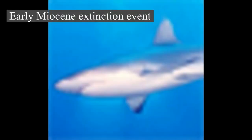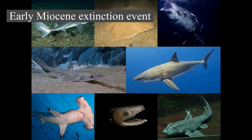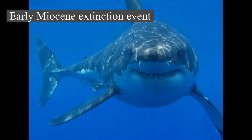A study published in 2021 provided evidence for a major shark extinction event that occurred 19 million years ago — 5 million years before the established Middle Miocene disruption. The cause of this extinction event is not yet known. The study suggests that pelagic shark diversity decreased by over 70% and abundance by over 90%, and that modern sharks never recovered from this event. The authors also state that prior to the extinction event, sharks played a much larger role in the open ocean ecosystem than they do today. In present times, only 53 open ocean shark species remain.